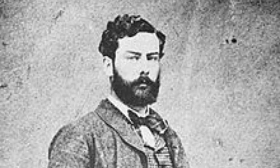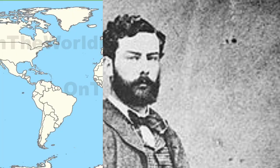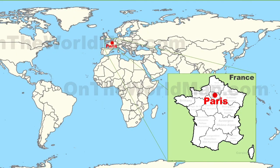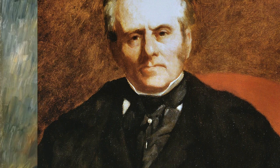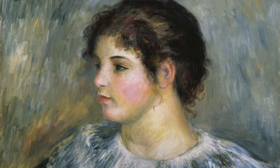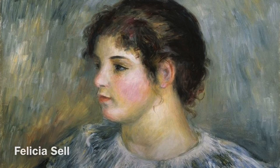Alfred Sisley was born on October 3, 1839, in Paris, France. His father was William Sisley, and his mother was Felicia Sell. William Sisley owned a business that transported fake flowers and silk around the world. Felicia Sell really liked to listen to and to play music. Alfred had four siblings, but one of them died at a young age.